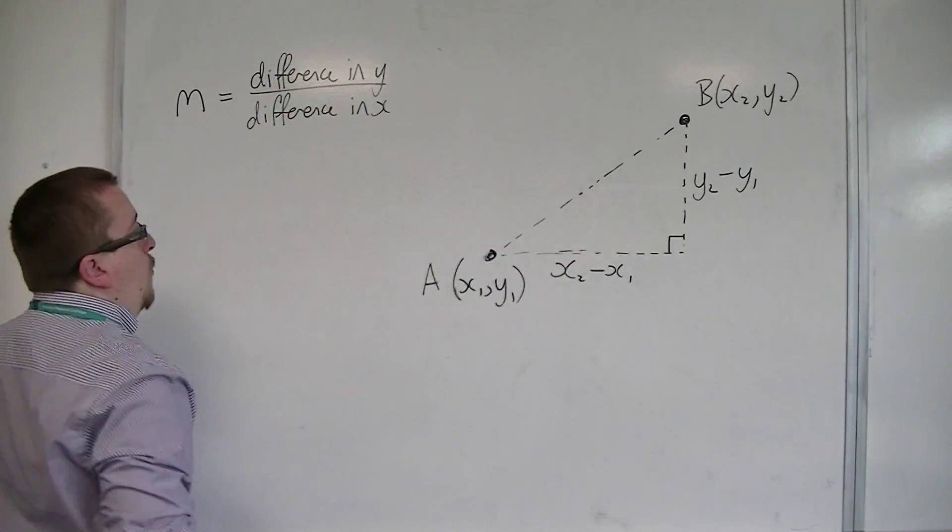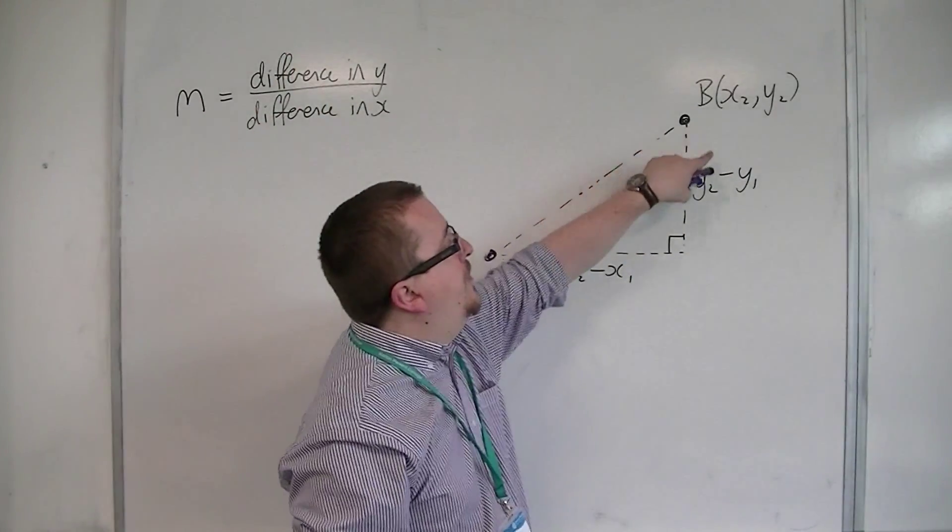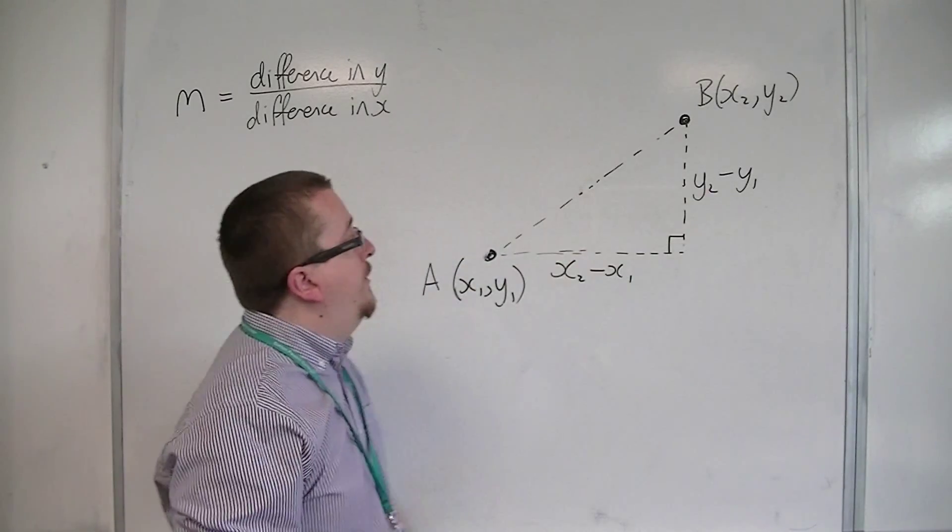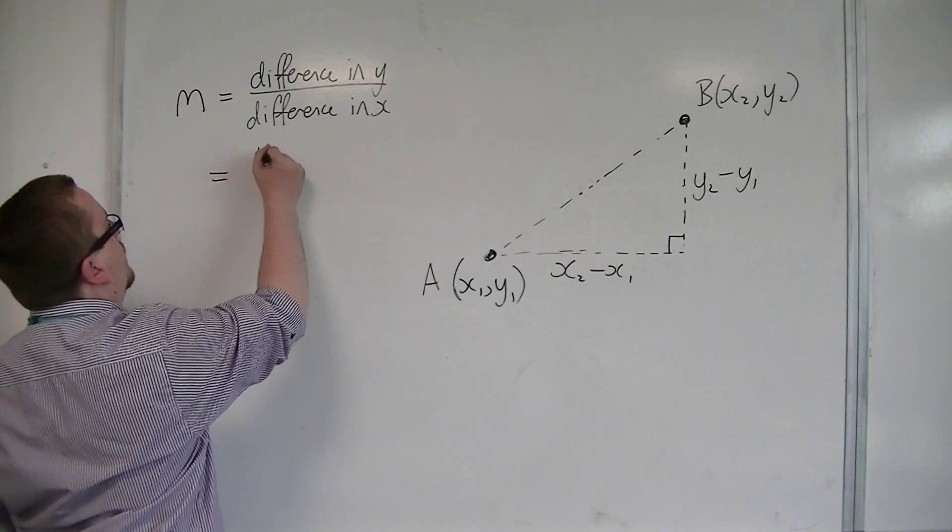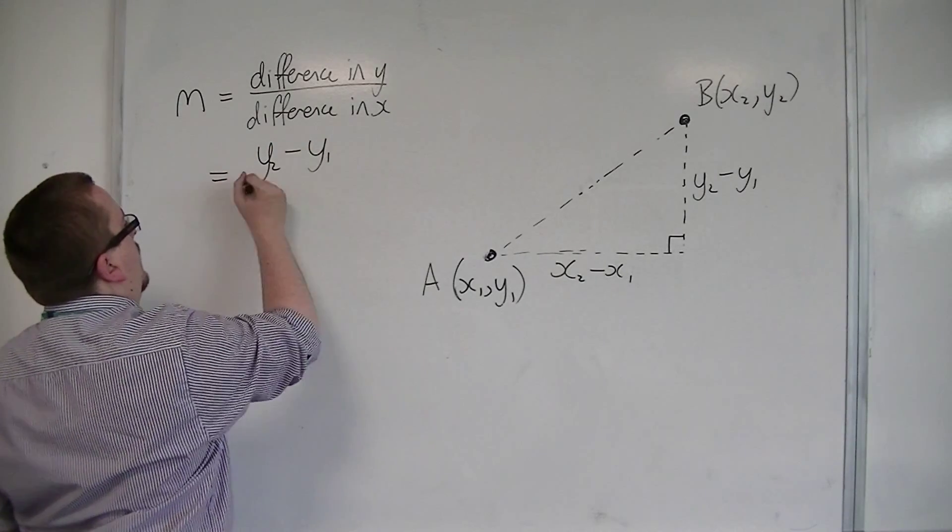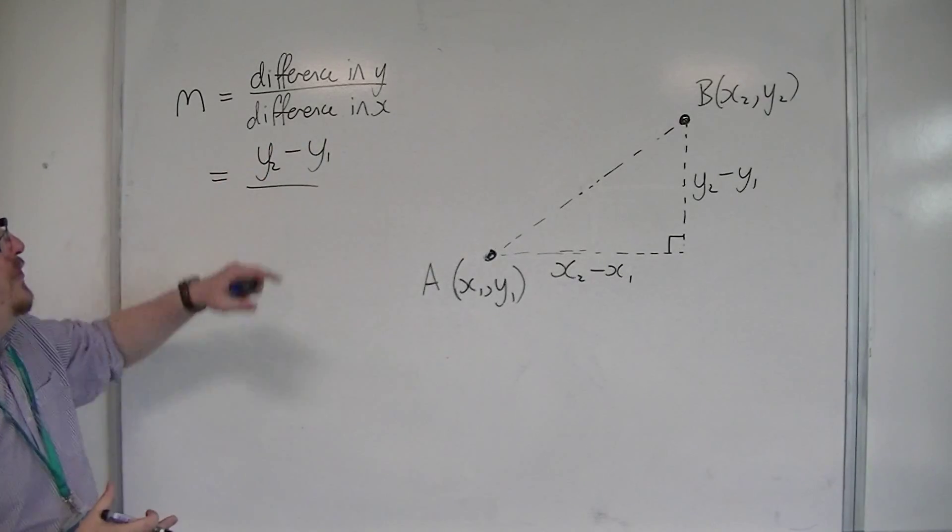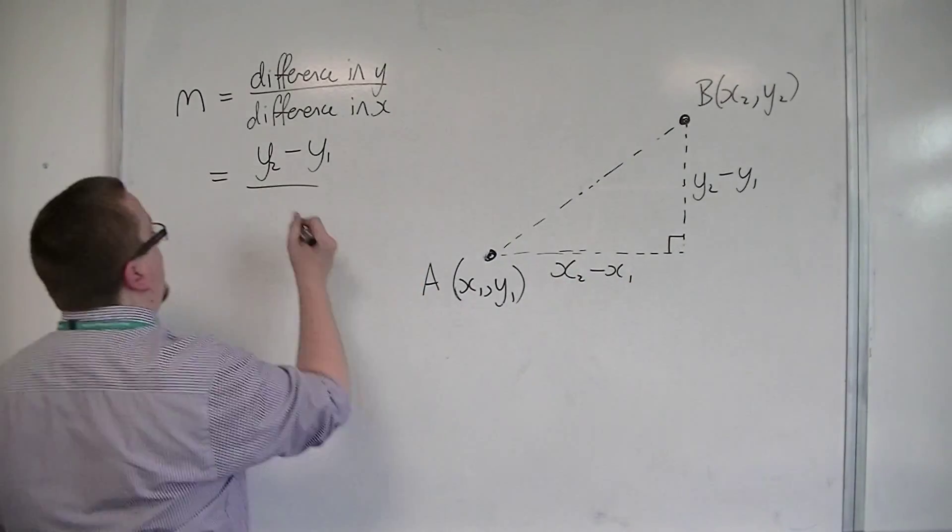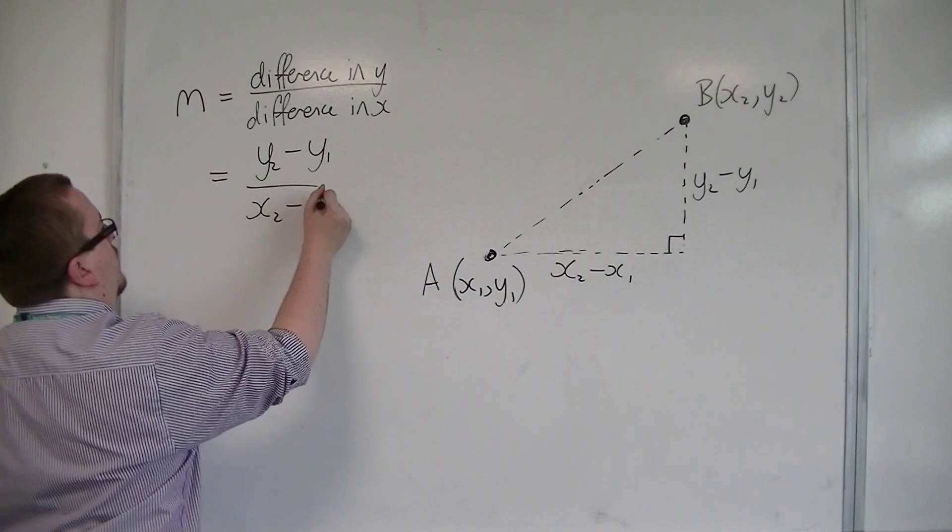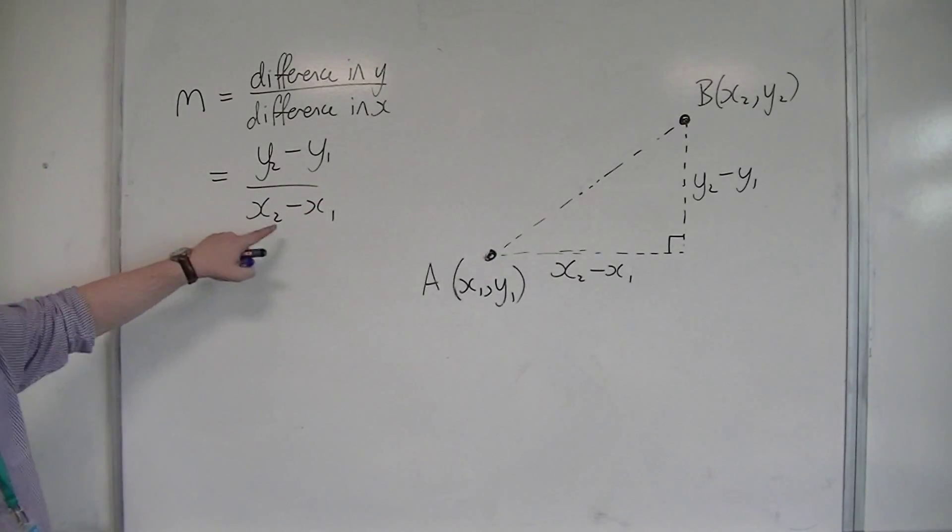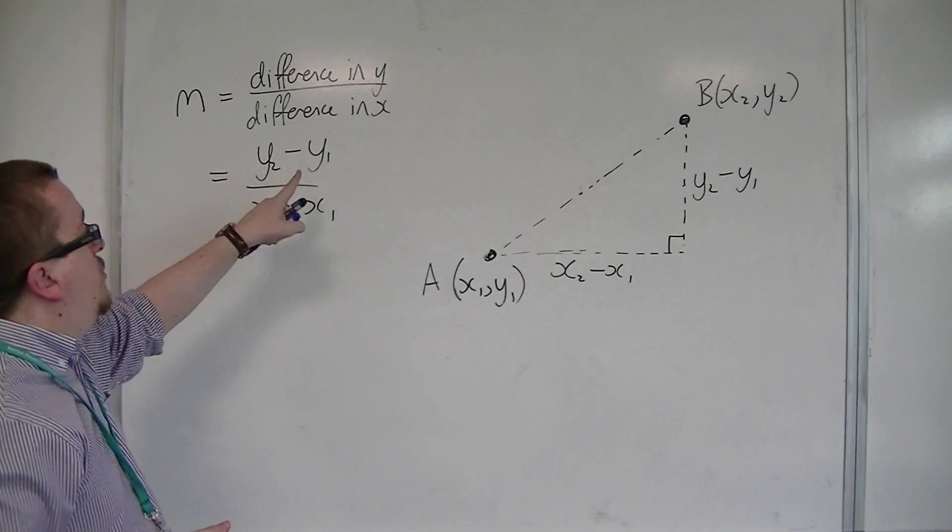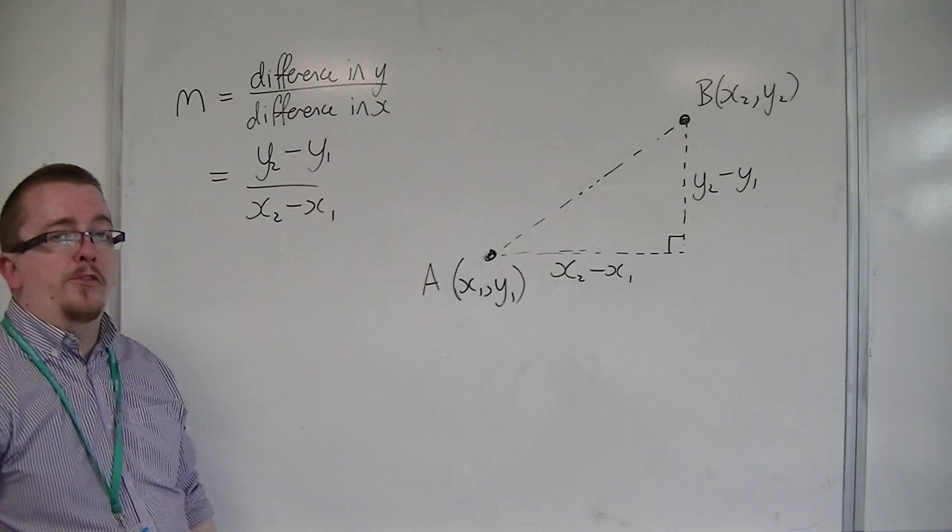To find the difference in y, well, that's just the difference in the y-coordinates, which is what we had in the previous video, the y2 minus y1. And then we want the difference in the x-coordinates, which we found in the previous video as well, the x2 minus x1. And so the gradient of a straight line can be found using this formula: y2 minus y1 over x2 minus x1.